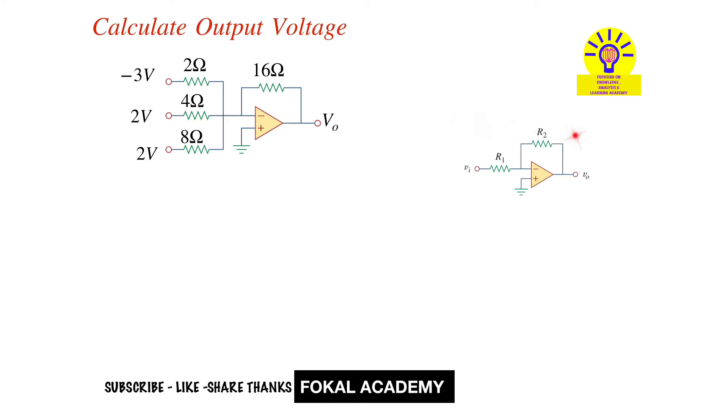This is the inverting op-amp circuit general standard format. For this, we know the output-input voltage relation: V_out equals minus R2 by R1 into input voltage. Here each source contributes a certain output voltage, so find that output voltage and sum them, because it is a summing amplifier.